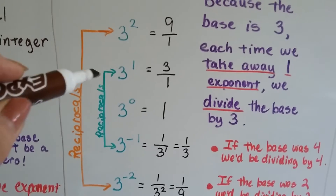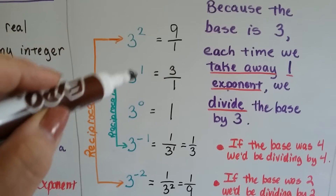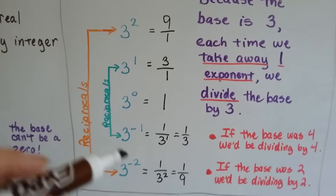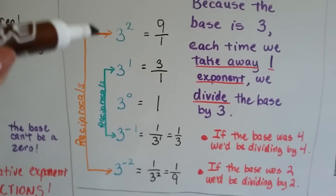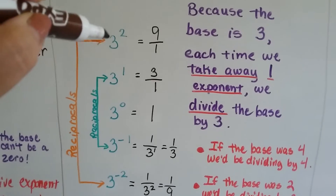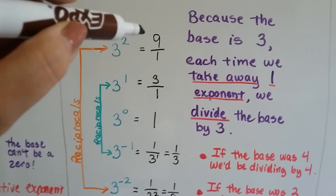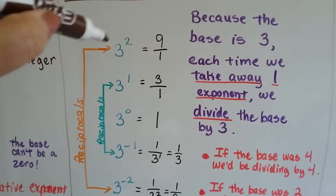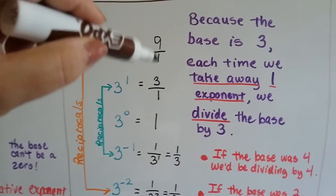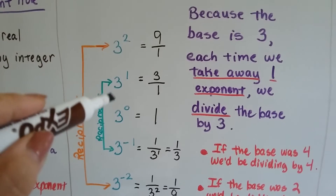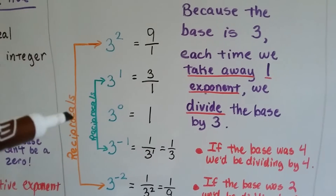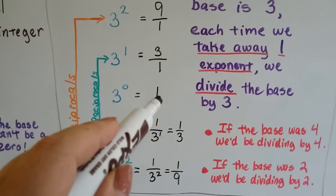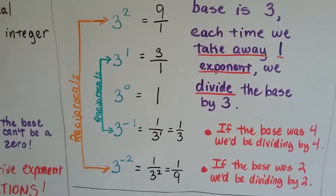Take a look at this chart. We've got 3 to the second power, 3 to the first power, 3 to the zero, 3 to the negative 1, 3 to the negative 2. This one means 3 times 3, which would be 9 over 1 if it were a fraction, right? 3 to the first power would be 3 over 1 — it equals 3. 3 to the zero power equals 1, like we explained in the last video.